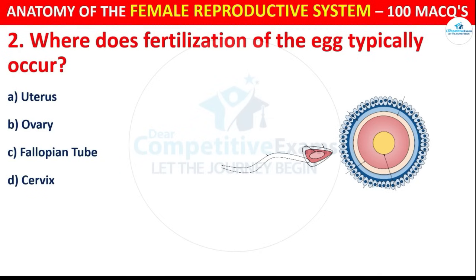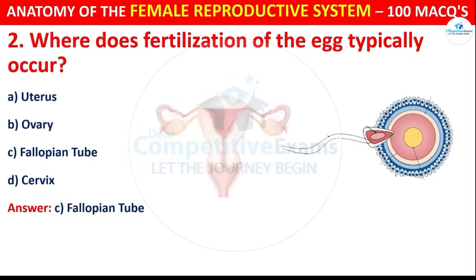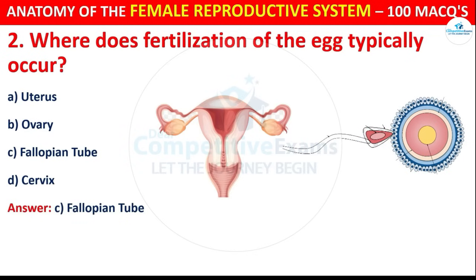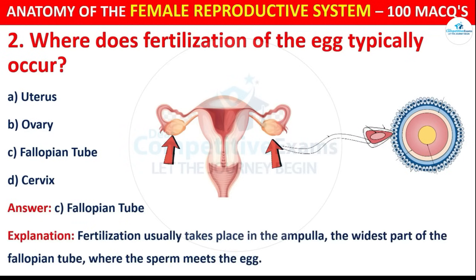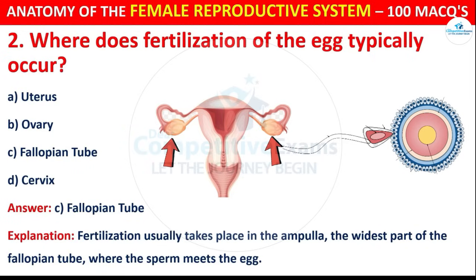The correct answer is C, i.e. Fallopian Tube. Fertilization usually takes place in the ampulla, the widest part of the fallopian tube, where the sperm meets the egg.